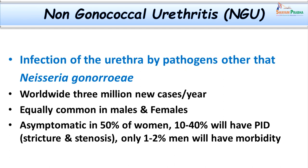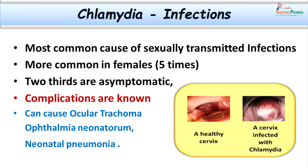The first and commonest cause in non-gonococcal urethritis is chlamydial infections. Chlamydia is also one of the important causes of sexually transmitted diseases. They are 5 times more common in females than in males, and when females are affected, two-thirds of them are going to be asymptomatic. The complications are mostly related to pelvic inflammatory disease, resulting in infection of the Bartholin glands, fallopian tubes, cervix, and adnexal tissues, leading to infertility.